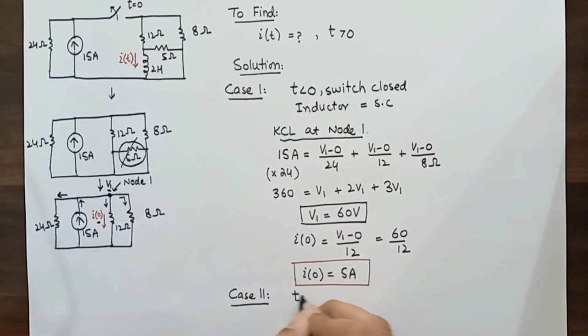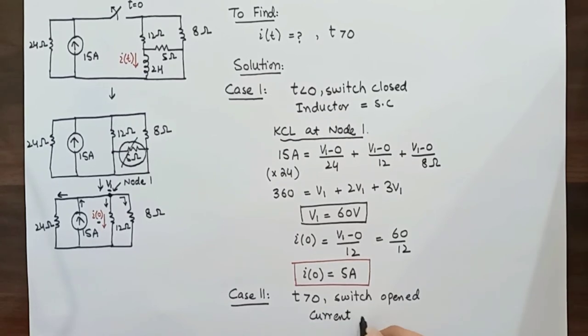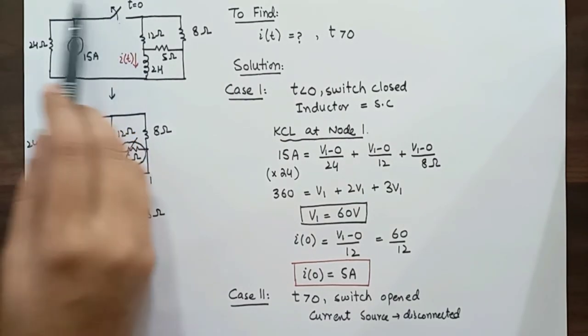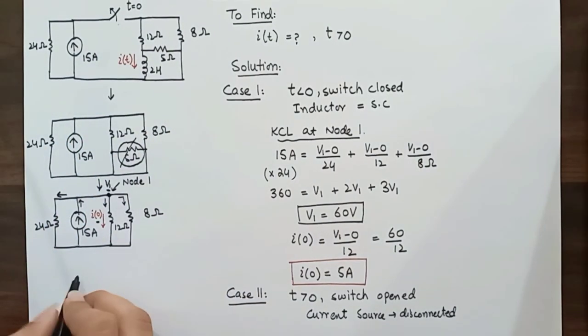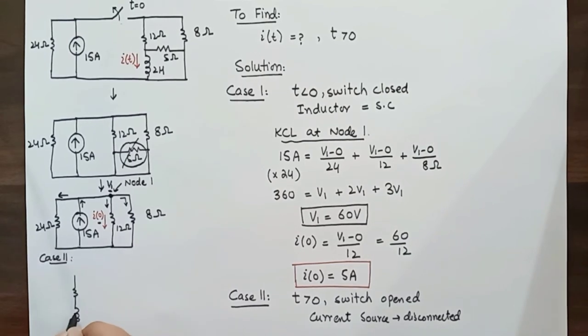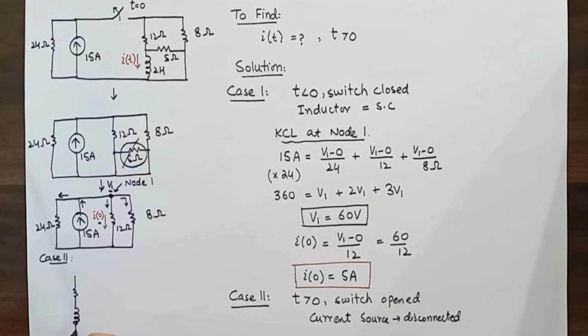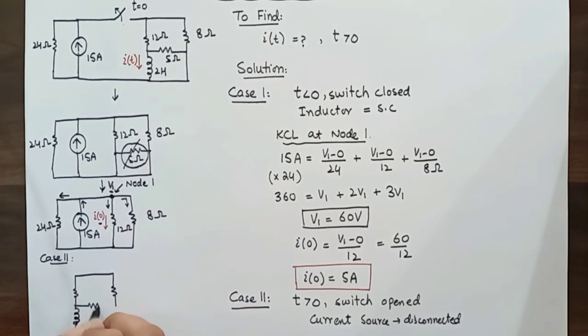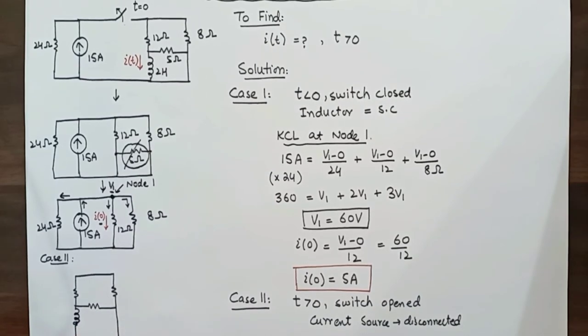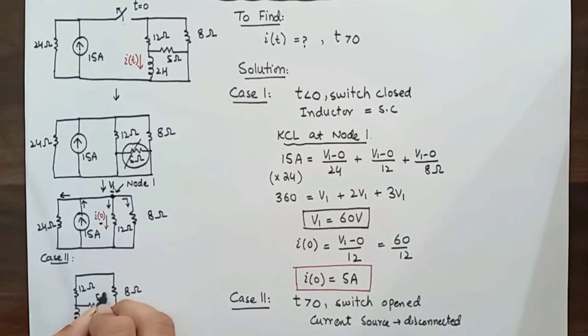Let's move to case 2 when the time t is greater than 0 and the switch has been opened. The current source will be disconnected from the circuit. So when the switch is opened, this whole portion is disconnected and only this portion remains. We can draw this resistor and the inductor with inductance of 2 Henrys. Now 5 ohms resistance will remain in the circuit because there is no short circuited path as inductor is present with an initial current of 5 amperes.